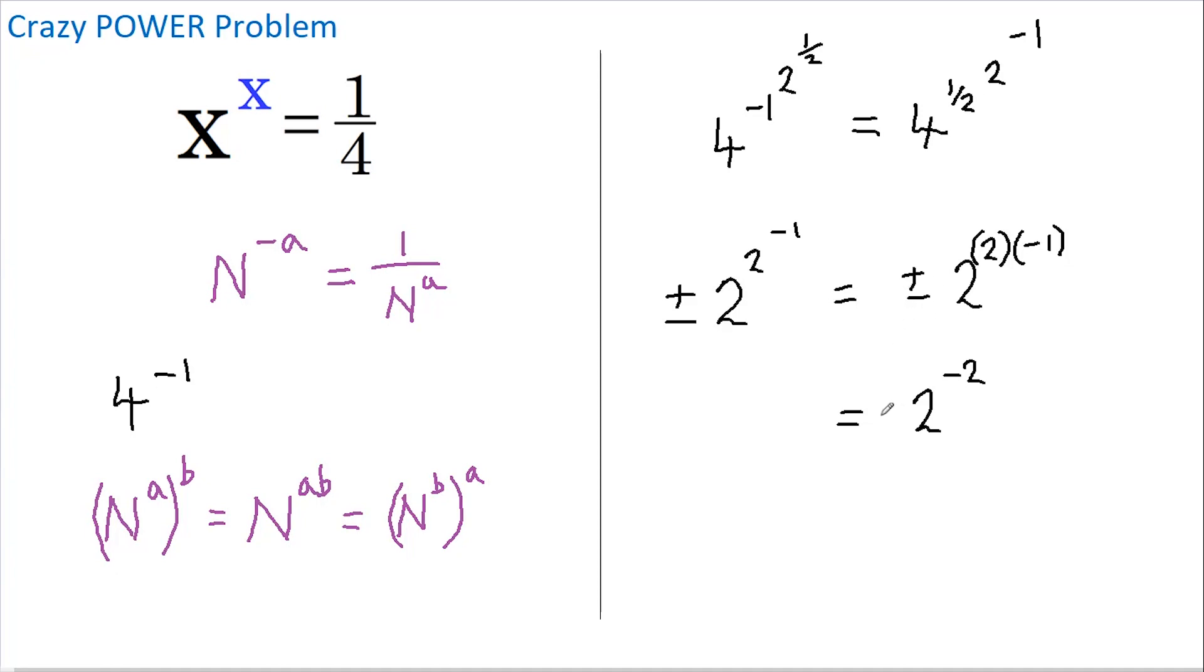And if I just take the negative part of this up here, we get negative 2 to the power of negative 2, and that now is in the identical format to what we're trying to find. And so we can finally conclude that x must equal negative 2, and that's the answer.